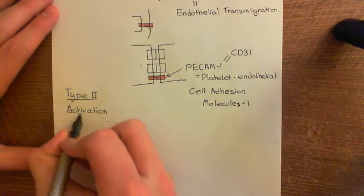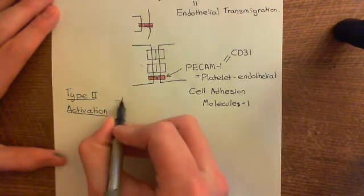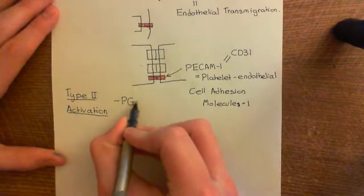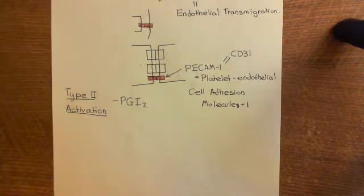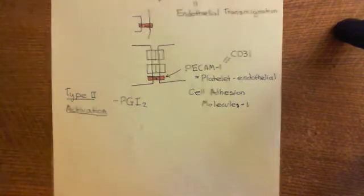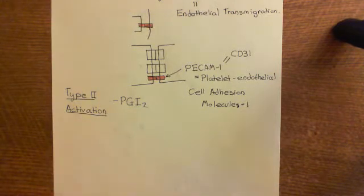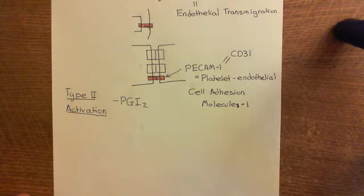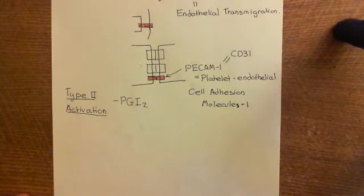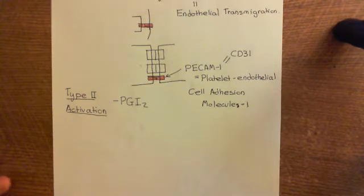Type 2 activation leads to production of prostacyclin, also known as prostaglandin I2, and you'll produce even more than with type 1 activation alone. This produces even more relaxation of the vascular smooth muscle cells surrounding the terminal arterioles, resulting in even more vasodilation — i.e., an even larger blood supply to the affected area.